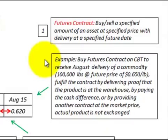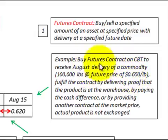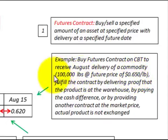The example we're going to go through here: we're going to buy a futures contract on a Chicago Board of Trade to receive an August delivery of a commodity — it could be a commodity like steel or copper. We're going to buy 100,000 pounds at a future price of 65 cents per pound. So our contract has an established future date of August delivery, a specified price of 65 cents per pound, and a specific amount of 100,000 pounds.